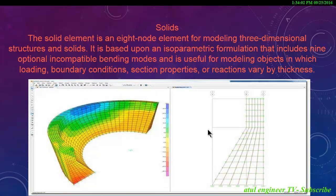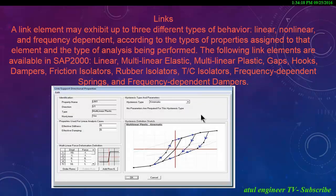The solid element is an eight-node element for modeling three-dimensional structures and solids, based upon an isoparametric formulation that includes nine optional incompatible bending modes. It is useful for modeling objects in which loading, boundary conditions, section properties or reactions vary by thickness.